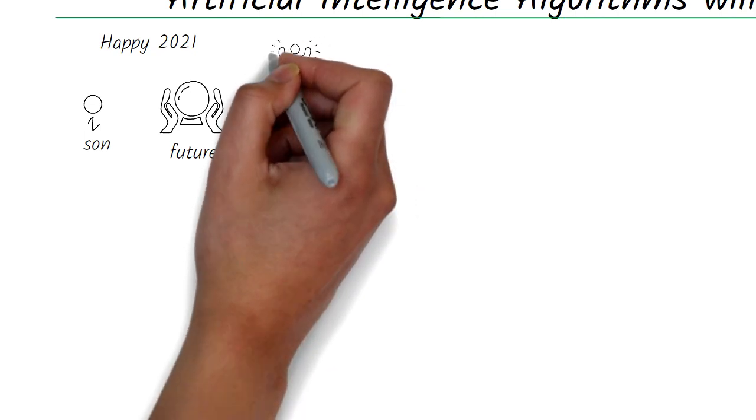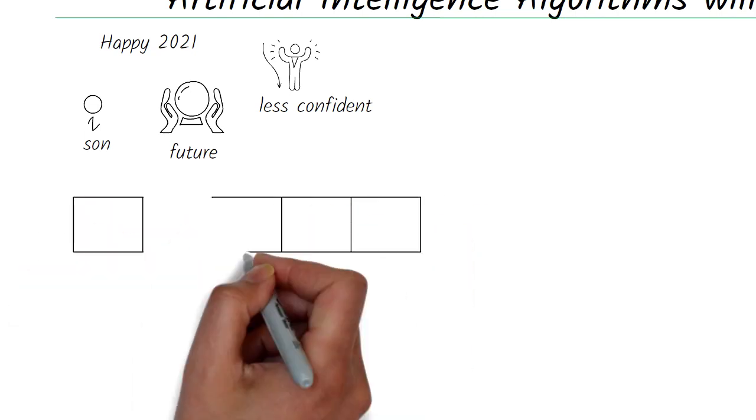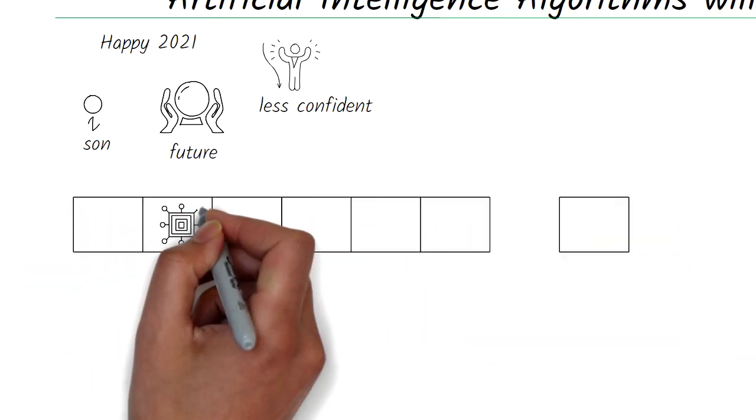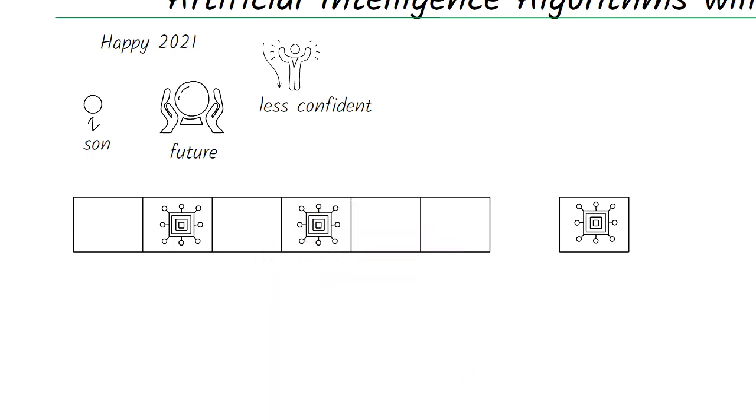But over time, I'm getting less and less confident with that statement. The reason is simple. The world is run by algorithms and more and more of these algorithms are based on AI making decisions that'll affect his life in profound ways.